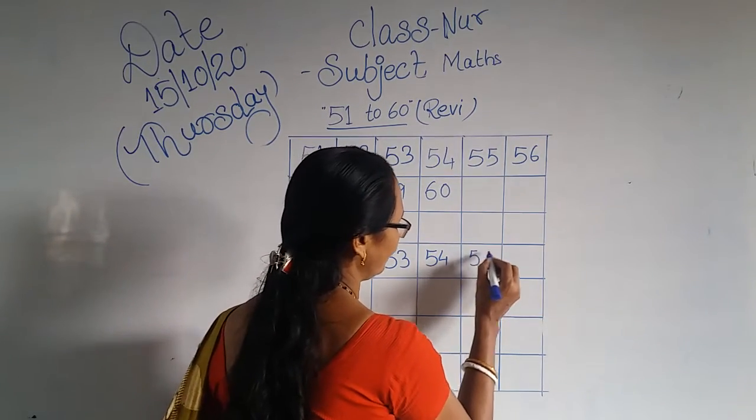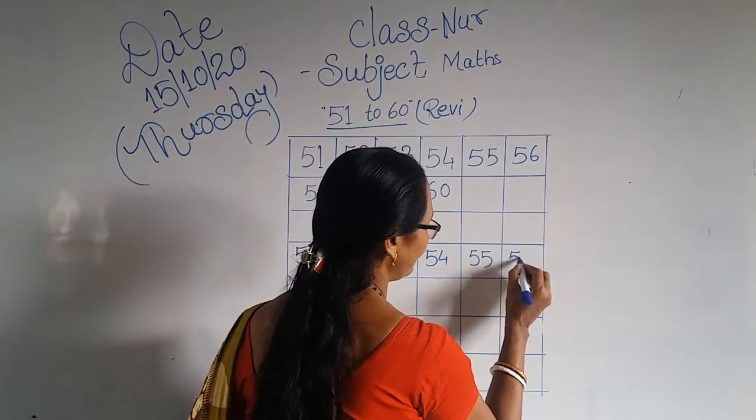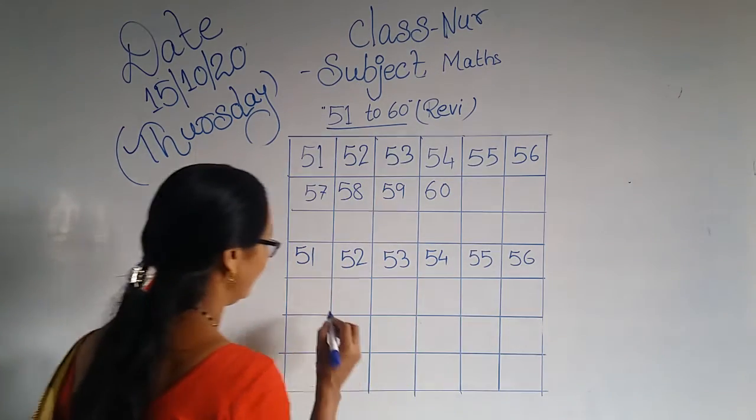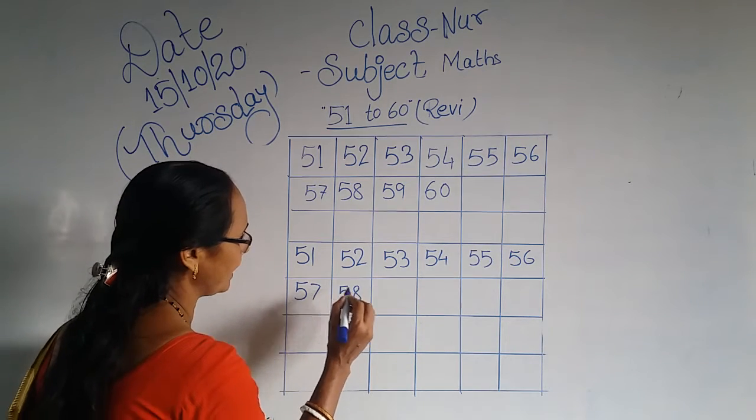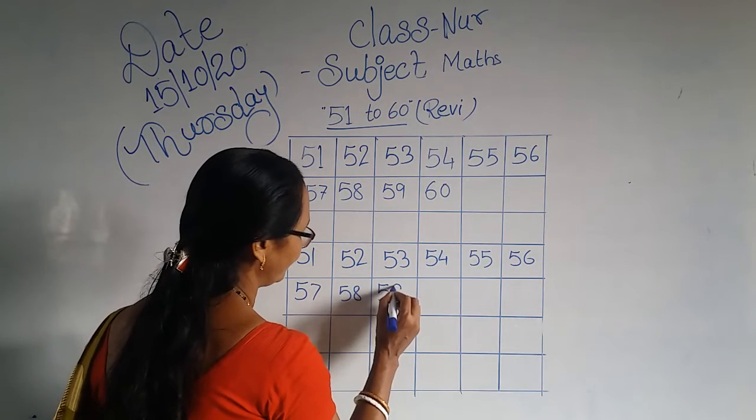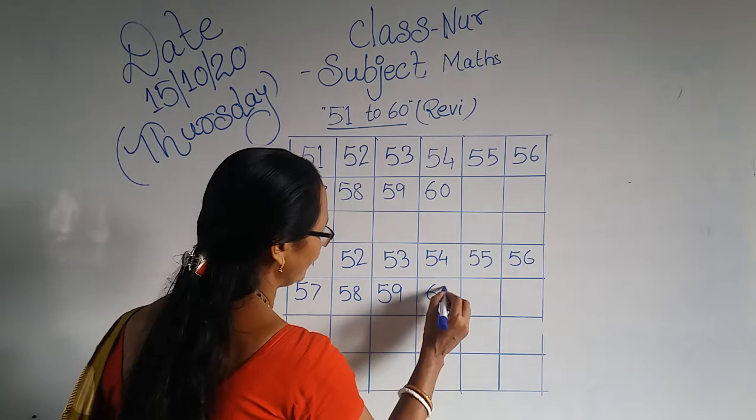5, 6, 56. 5, 7, 57. 5, 8, 58. 5, 9, 59. 6, 0, 60.